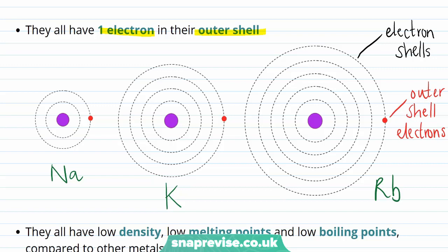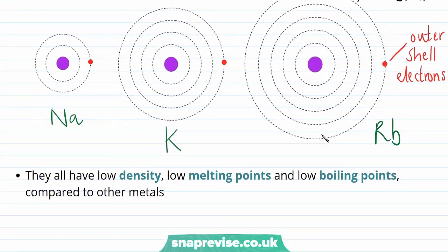Generally, metals are found towards the left hand side of the periodic table. Group 1 metals specifically have low densities, low melting points and low boiling points, especially when compared to other metals in the periodic table.